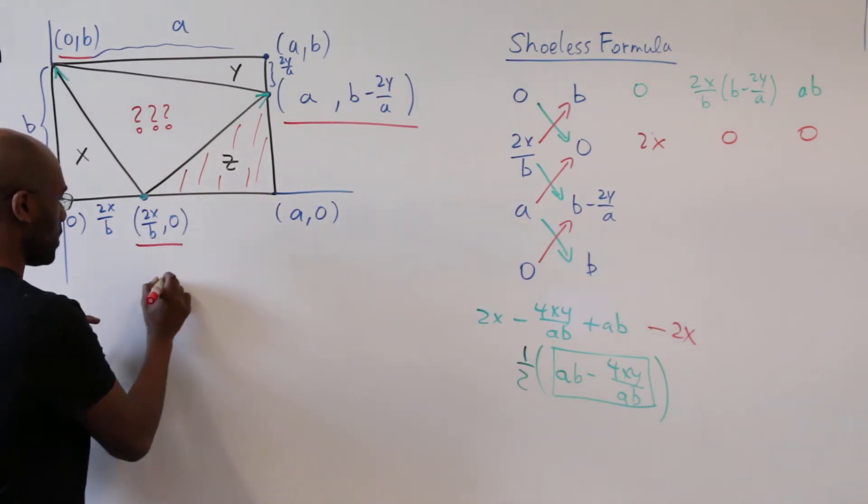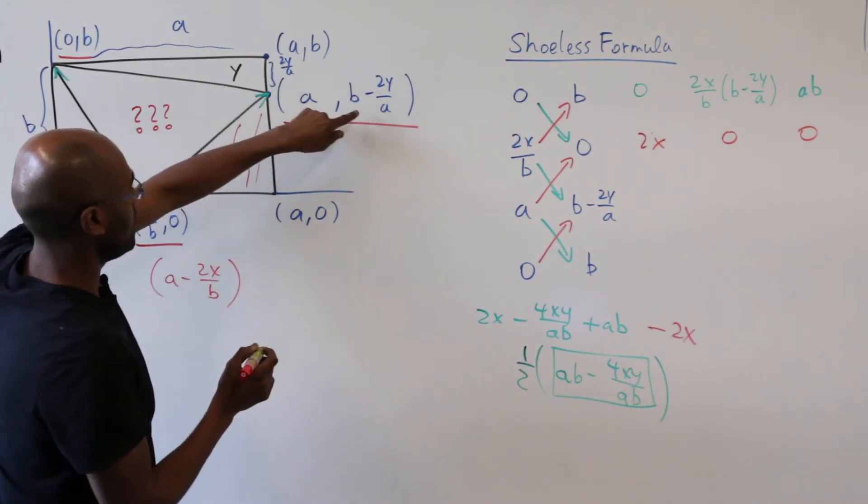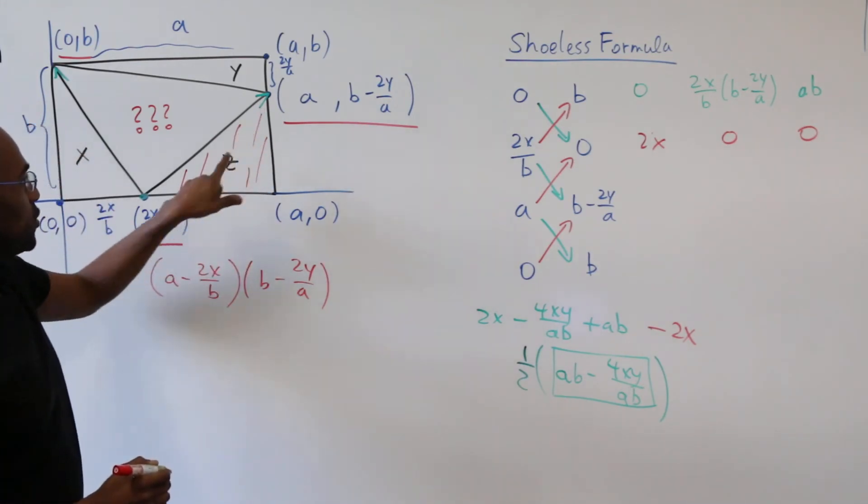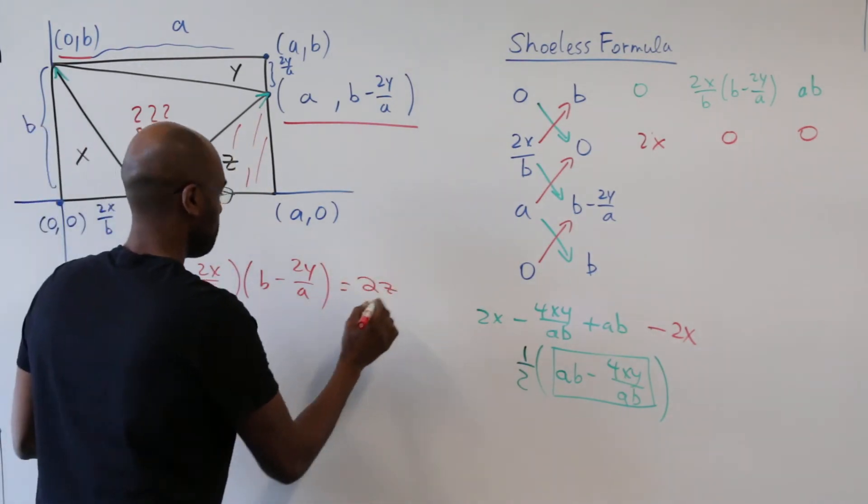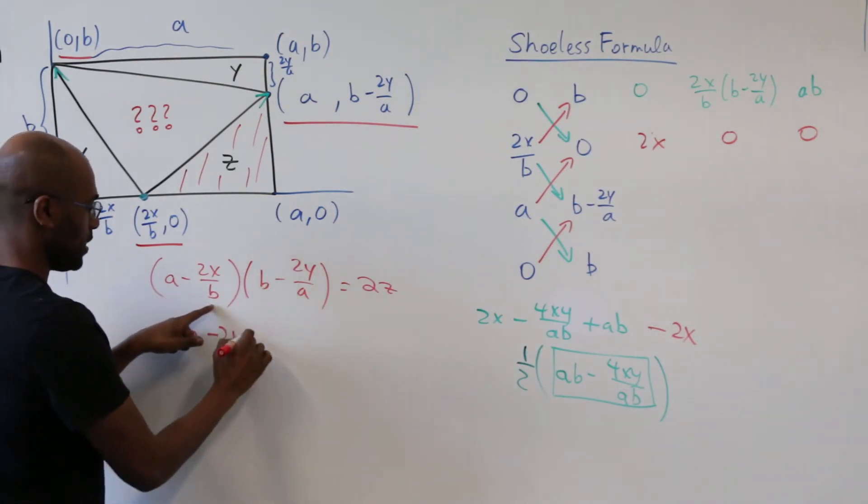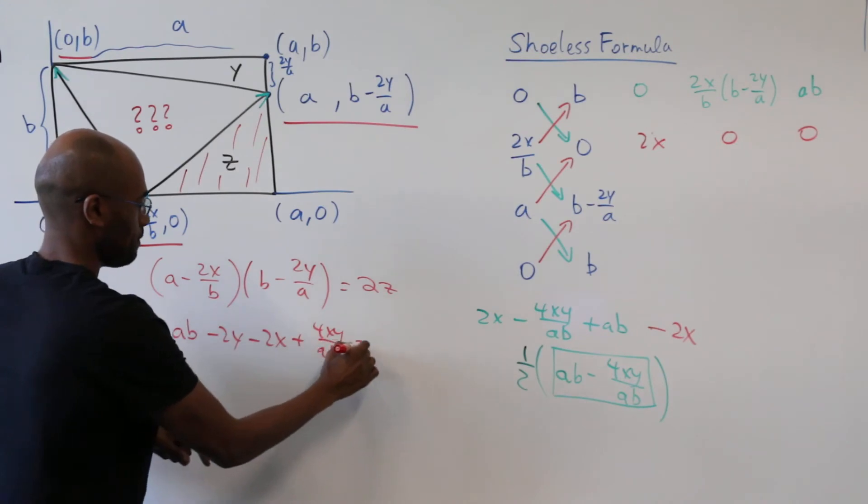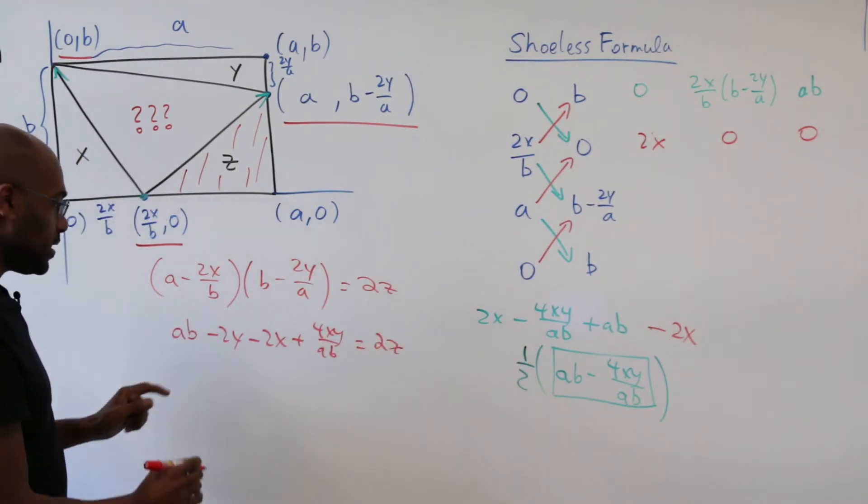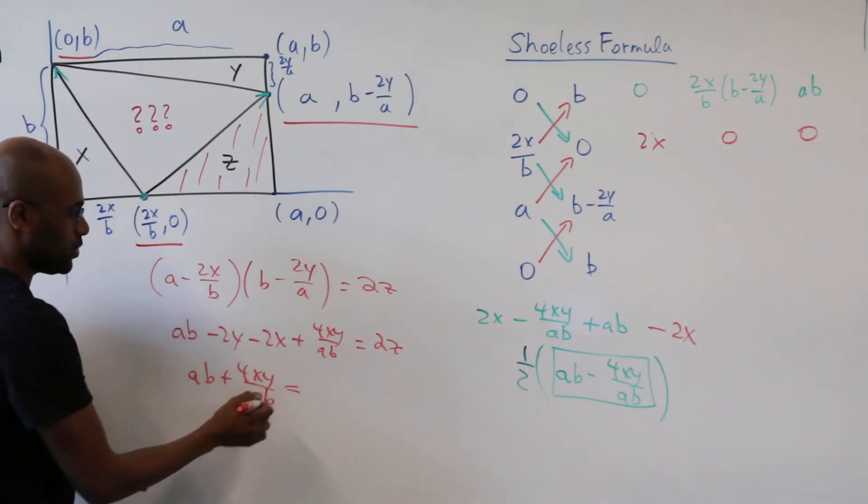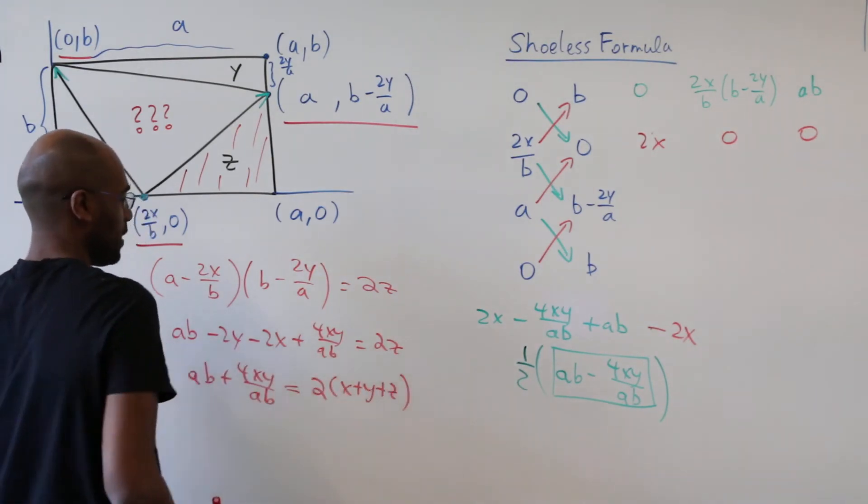The length of this triangle is the quantity a minus 2x over b and the height here is b minus 2y over a and that product has to be twice the area of this triangle which is 2z. If we expand this we get ab minus 2y minus 2x plus 4xy over ab equals 2z. And so at least we have an expression for ab plus 4xy over ab in terms of x, y, and z. If we rearrange this we get 2 times the quantity x plus y plus z.